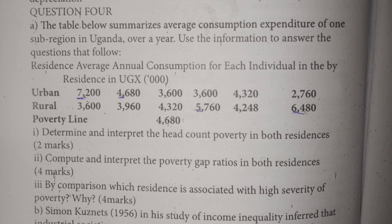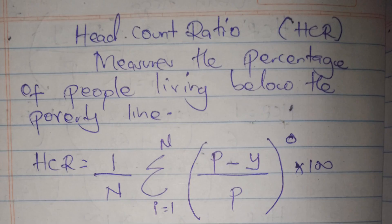In the rural area, we also do not consider the figures 5,760 and 6,480 because they are above the poverty line. Our poverty line is 4,680, so those two are not going to be considered when calculating our head count ratio. The formula for calculating head count ratio is: 1 over n, times the summation of (p minus y) over p, to the power 0, times 100.